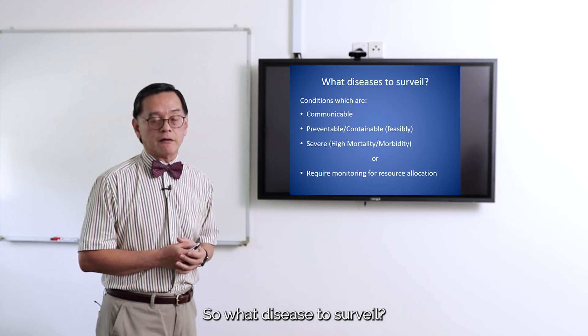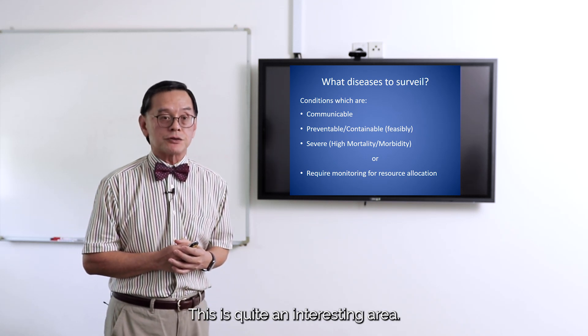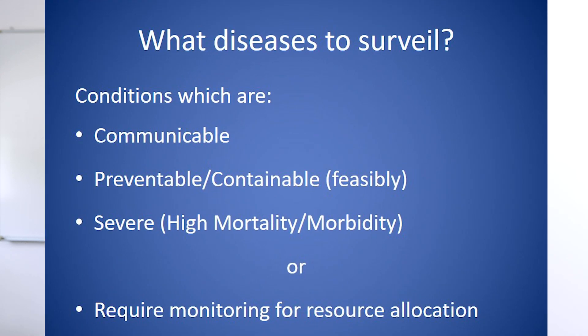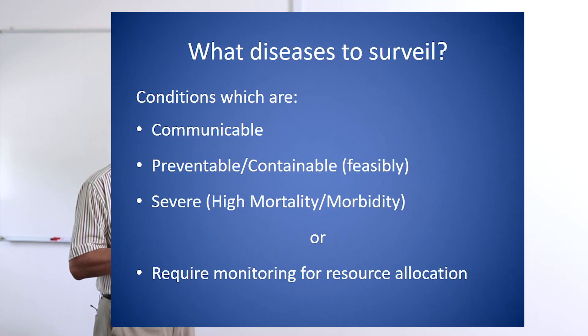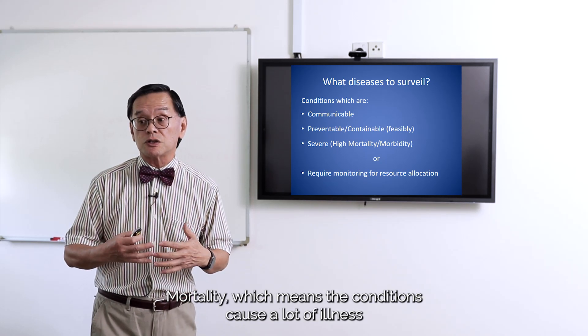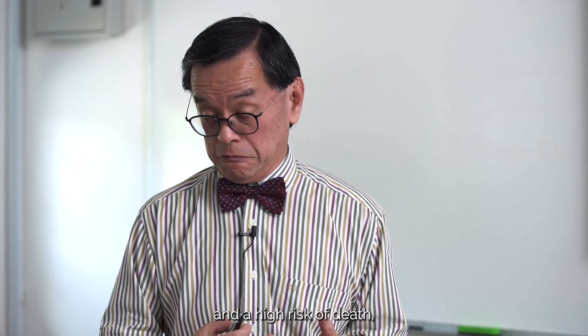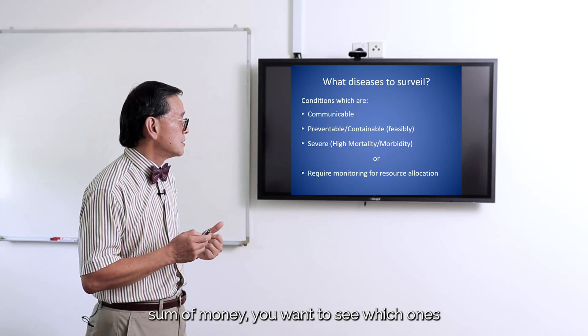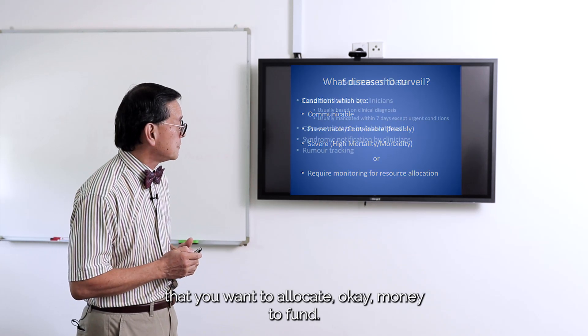So what diseases do we survey? This is quite an interesting area. We focus on conditions that are communicable, preventable, and controllable — conditions you can actually do something about. We also prioritize conditions with high morbidity and mortality, meaning conditions that cause a lot of illness and a high risk of death, since you have a finite sum of money and must decide which ones to allocate funding to.